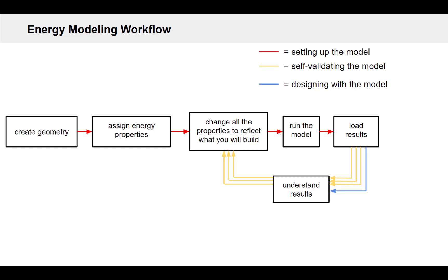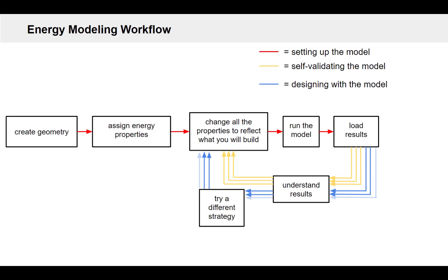When you finally get there, this is not the end, because you're likely going to want to actually design with the model now and really start to pull the value out of it. This begins the process of trying out a different strategy — a different option of what you might build. Maybe it's more insulation or a fancy ventilation system. You're going to change your model and then rerun it to see how big of an impact that has. If you're using it correctly, you're probably doing this a few times across a few different options to really weigh which ones would be the best use of your project funds and your time — exploring a wide array of strategies. At the end of this, you end up with a great design, a great building.